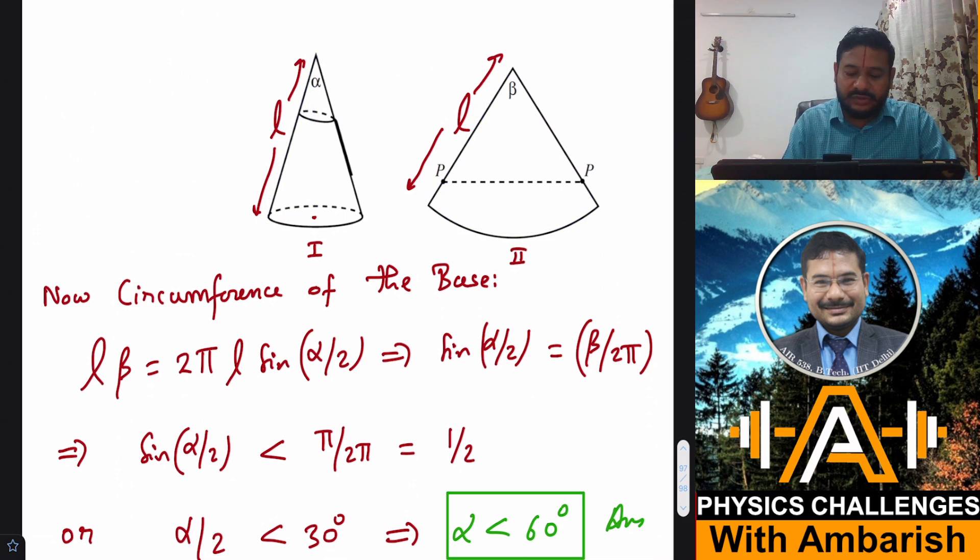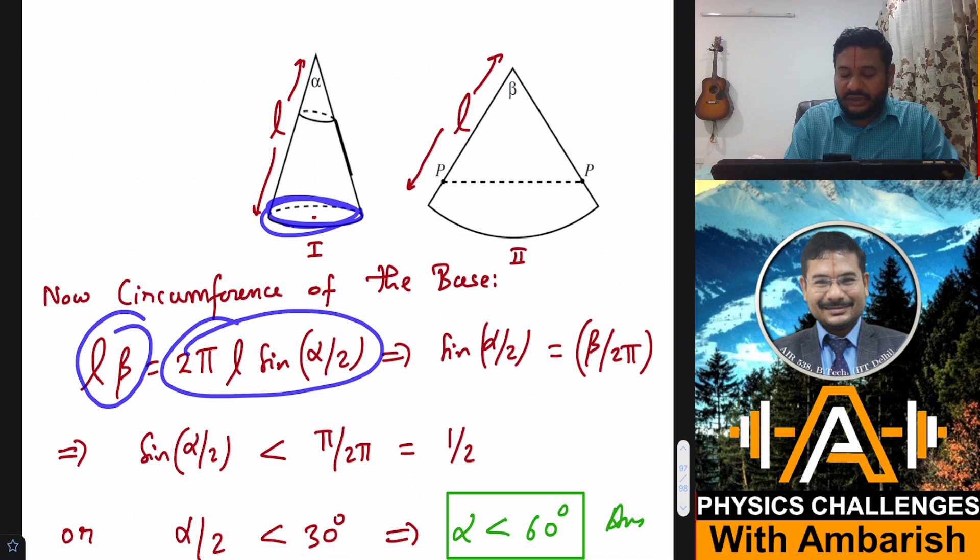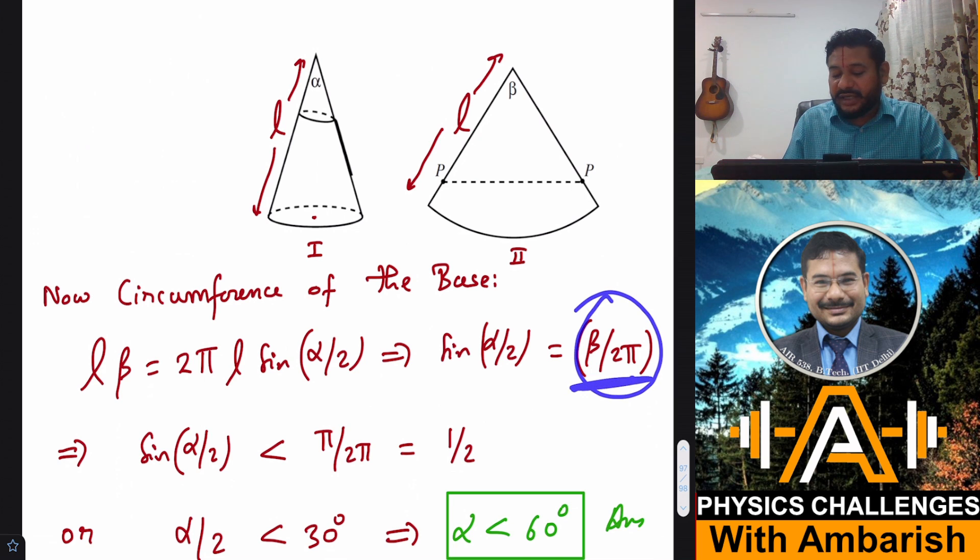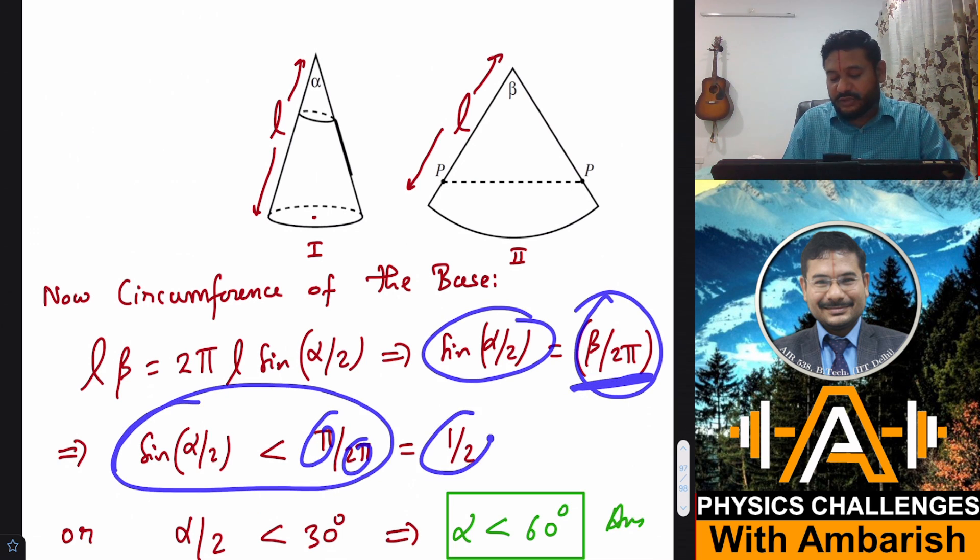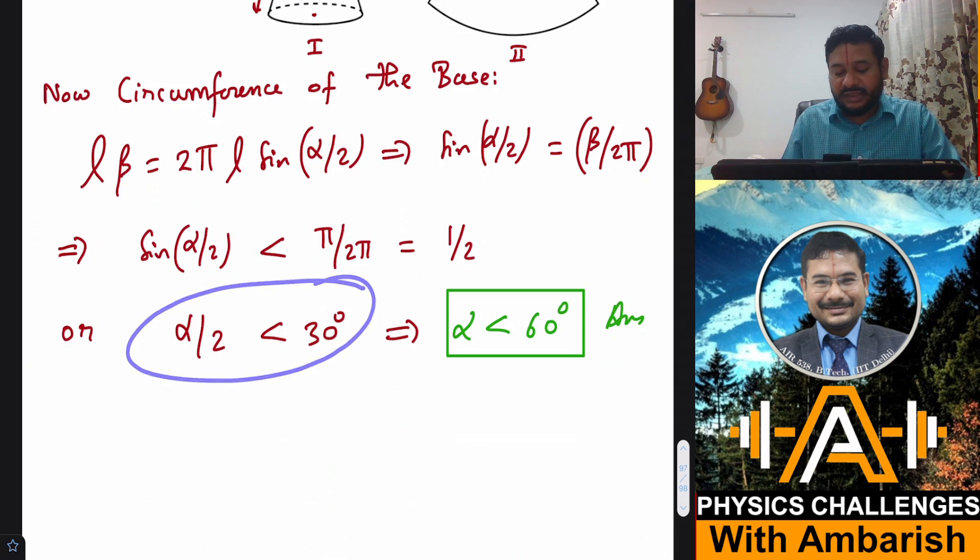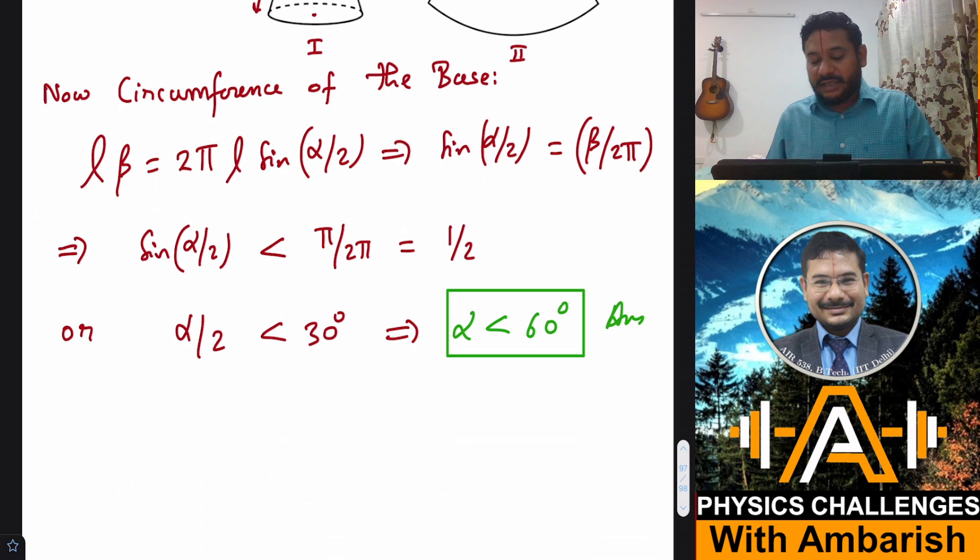So this radius becomes L sine alpha by 2 and 2 pi r is the circumference. So 2 pi L sine alpha by 2 is equal to L beta. So that gives you sine alpha by 2 is equal to beta by 2 pi. And since beta is less than 180 degrees, that means what sine alpha by 2 must be less than pi upon 2 pi. That is, it should be less than 1 by 2. And that gives us alpha by 2 should be less than 30. So sine 30 is half. And therefore alpha should be less than 60 degrees.